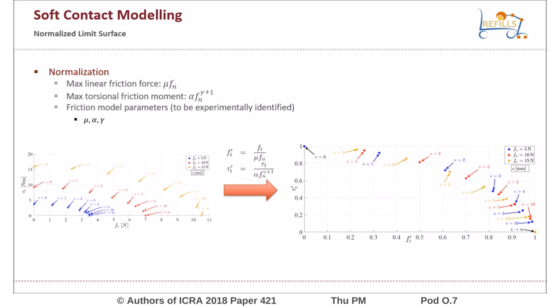With a priori knowledge of the maximum linear friction force and the maximum torsional friction moment, we can normalize the limit surface. The parameters needed are the friction coefficient μ and the maximum torque parameters α and γ, which can be experimentally identified. Note how the different limit curves collapse into a single curve independently from the grip force.